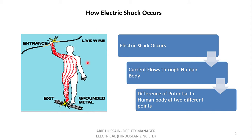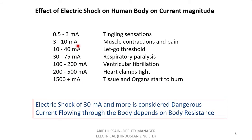For an electric shock to occur, there should be a flow of current through a human body, and current only flows when there is a difference of potential from one part of the body to another. In this example, we can see that this person is touching a live naked wire, so the hand becomes a relatively higher potential while the foot is at ground potential — zero potential. So there is a difference of potential from the hand to the foot, and once there is a difference of potential, the current will start flowing through the human body. It will enter through the hand and exit through the foot, and once there is a flow, we feel an electric shock.